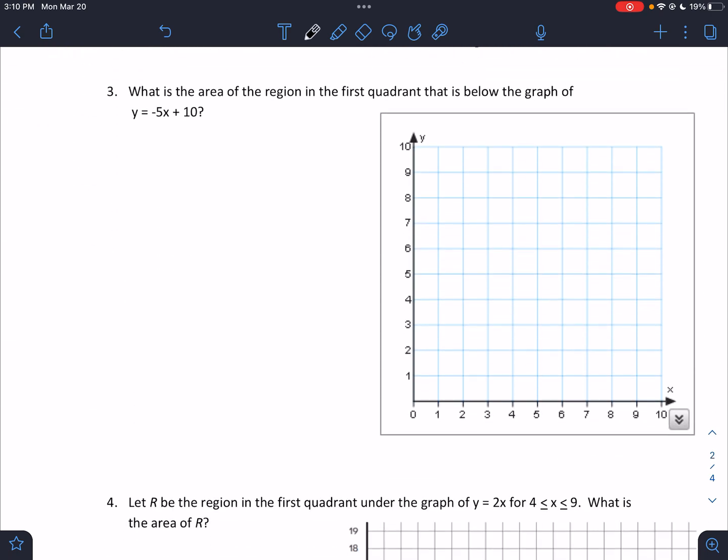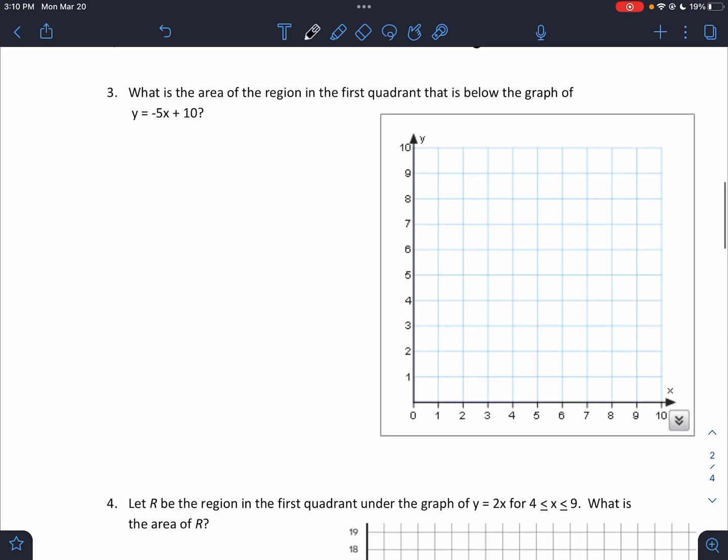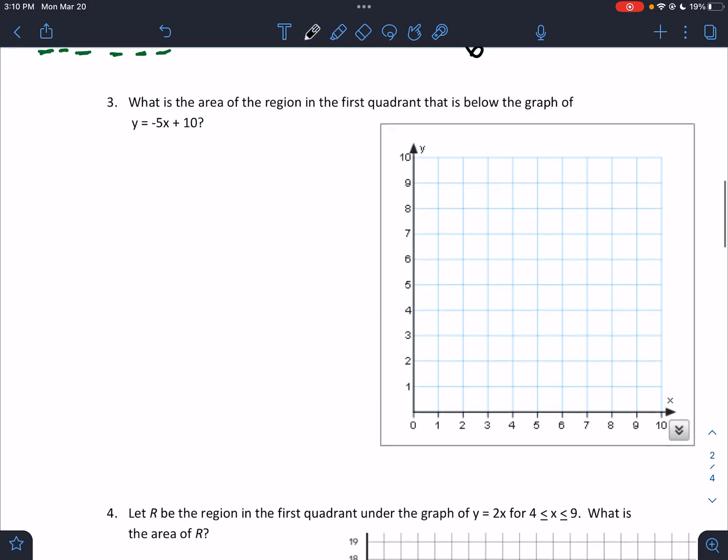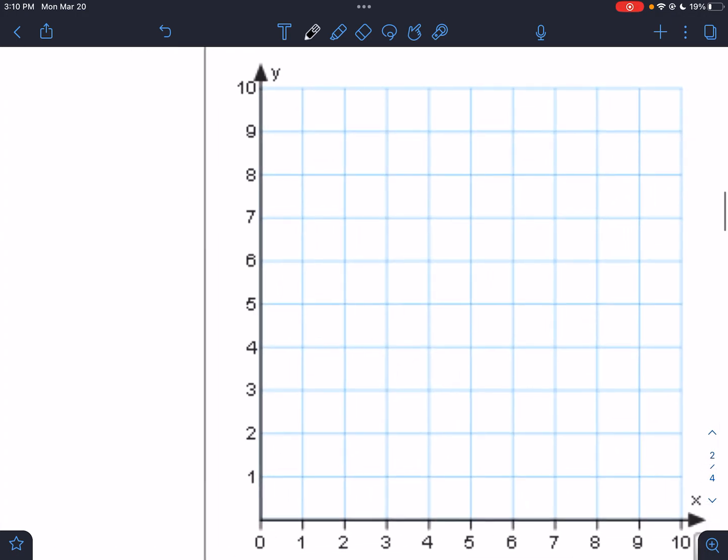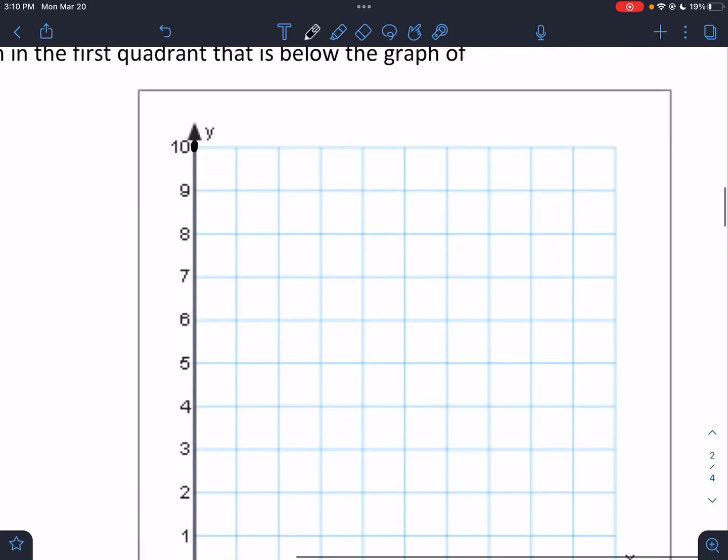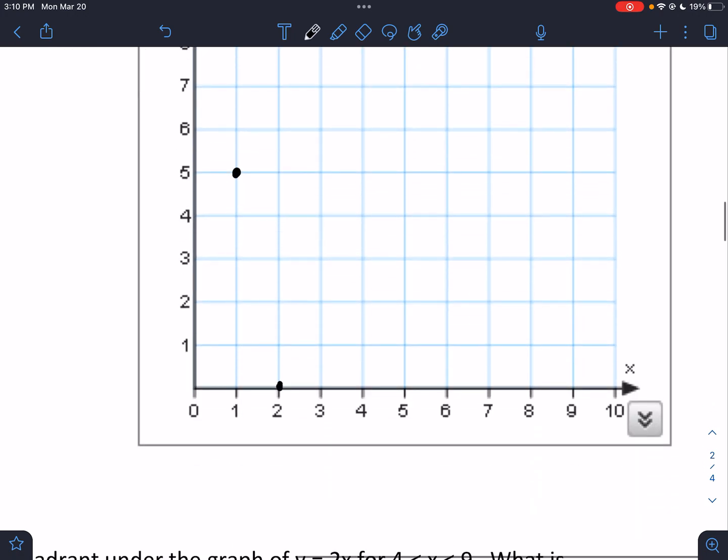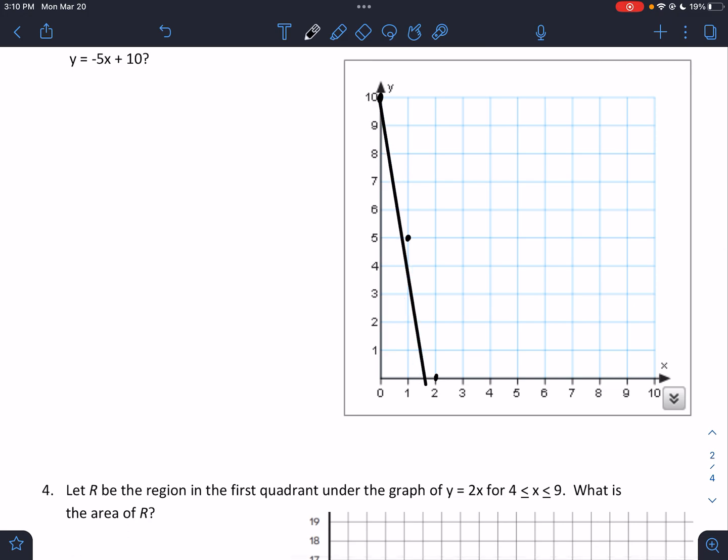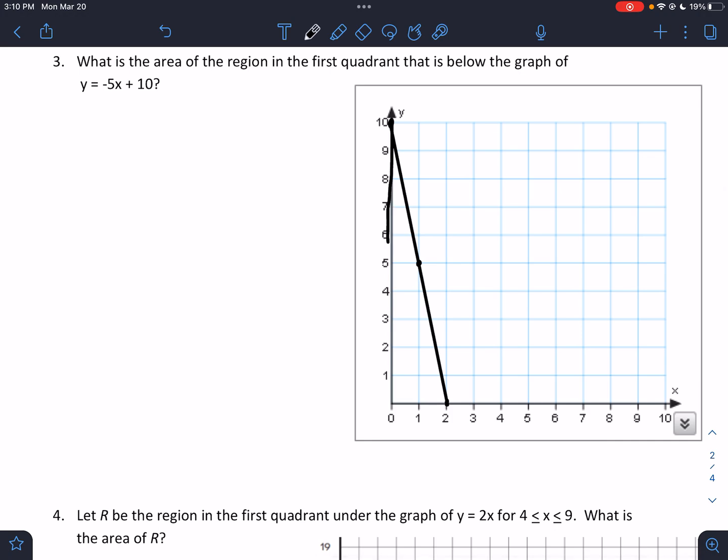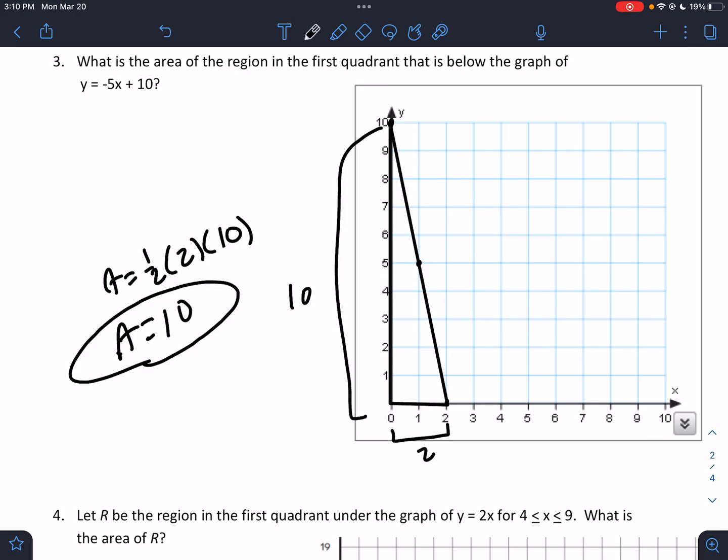The next two are very similar questions to the first two. I would want you to try to do these before you watch me. So if you're really trying to learn how to do this, attempt this, and then watch the video. So hit pause, try to do number 3 and number 4, and then come back. But let's do number 3. So y equals negative 5x plus 10. So we're starting at 10. We're going down 5 over 1, down 5 over 1, and we're going to connect those. And it's in the first quadrant again. So we know that it's this right triangle in the first quadrant has a base of 2 and a height of 10. So that is 1 half times the base times the height, which is just 10. So the area of that triangle would be 10.